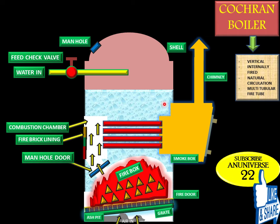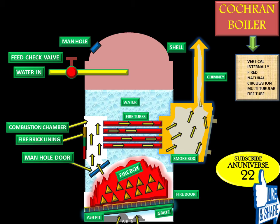The gases pass from the firebox and enter the combustion chamber. The hot gases from the combustion chamber flow through the horizontal fire tubes, transferring heat to the water by convection. The flue gases coming out of the fire tubes pass through the smoke box and are exhausted to the atmosphere through the chimney. The smoke box is provided with a door for cleaning the fire tubes and smoke box.